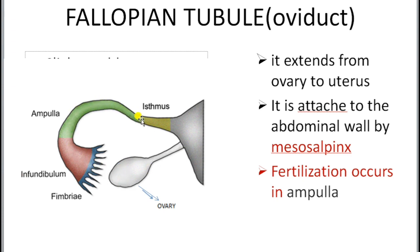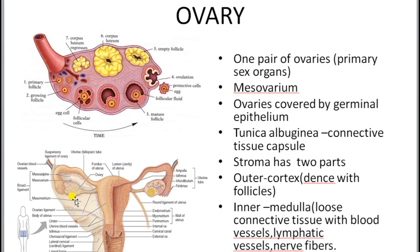The second part of the reproductive system is the fallopian tubule or oviduct. It extends from the ovary to the uterus, connecting the two. It is attached to the abdominal wall by a peritoneal membrane known as mesosalpinx, which is very transparent.